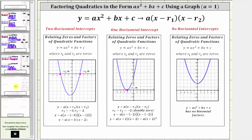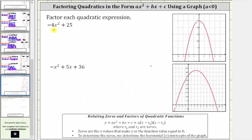Going back to our examples, to factor negative four x squared plus 25 using a graph, we need to graph the quadratic function y equals negative four x squared plus 25. I've already graphed the function here on the right. Notice how we have two horizontal intercepts, one here on the left and one here on the right, where the ordered pair for this point is negative 2.5 comma zero.